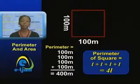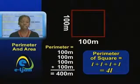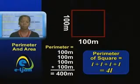So the formula for the perimeter of a square is L plus L plus L plus L, or 4L.